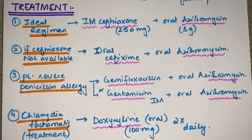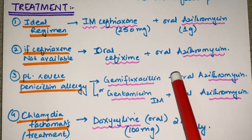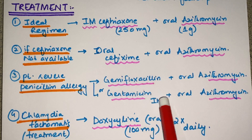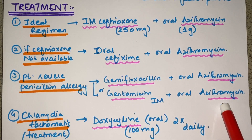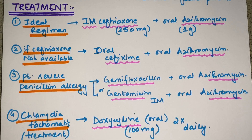Oral azithromycin is common to all regimens. If the patient has a severe penicillin allergy, the combination is either gemifloxacin plus oral azithromycin, or gentamicin IM injections plus oral azithromycin 1 gram. For Chlamydia trachomatis co-infection, we use doxycycline 100 mg orally twice daily. This is the complete treatment for a patient of gonorrhea.